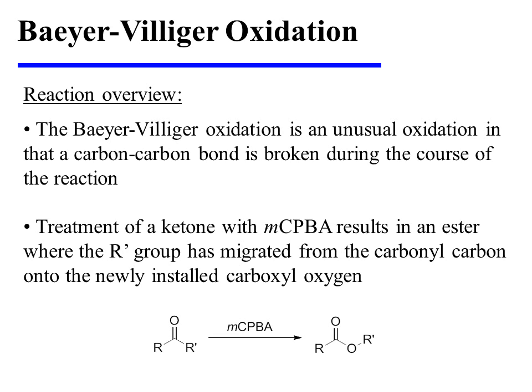The Baeyer-Villiger oxidation is an unusual oxidation in that a carbon-carbon bond is broken during the course of the reaction. Treatment of a ketone with a peroxy acid, such as MCPBA, results in an ester in which an R' group has migrated from the carbonyl carbon onto the newly installed carboxyl oxygen.